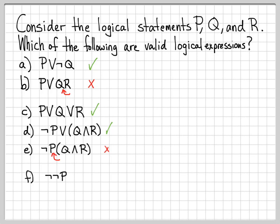What about 'not not P'? You might be tempted to say you need something between the two nots, but actually this is okay. We can think of this as: not, and then notting P — so 'not P' becomes some thing (call it S), and this is just 'not S.' It's actually okay to pile up nots over and over with nothing between them. That's totally legitimate. So writing something like 'not not not not not Q' would be perfectly fine — you can negate logical expressions as many times as you want.